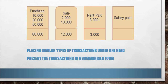What we can do is place the purchase transactions in a particular place, sale transactions in a particular place, then rent paid, salary paid, etc. — these transactions will be separated and placed at different positions. In our example, the purchase transactions are suppose 10,000, 20,000, 50,000. We place all purchase transactions in one place. Similarly, we apply the same principle to sale transactions — for example, Rs. 2,000 on one day and Rs. 10,000 on another day.